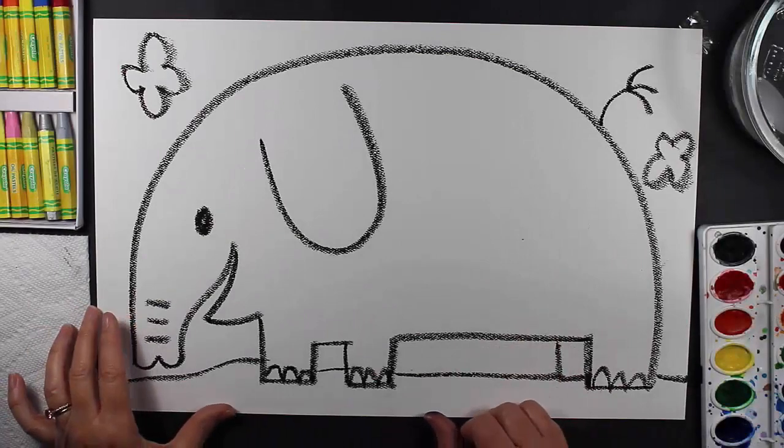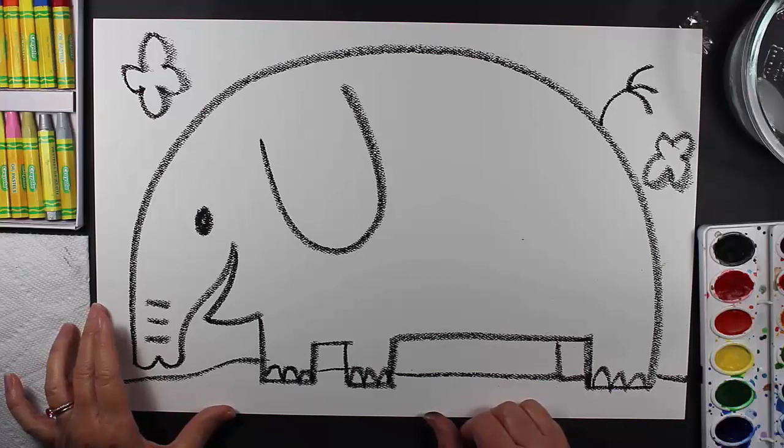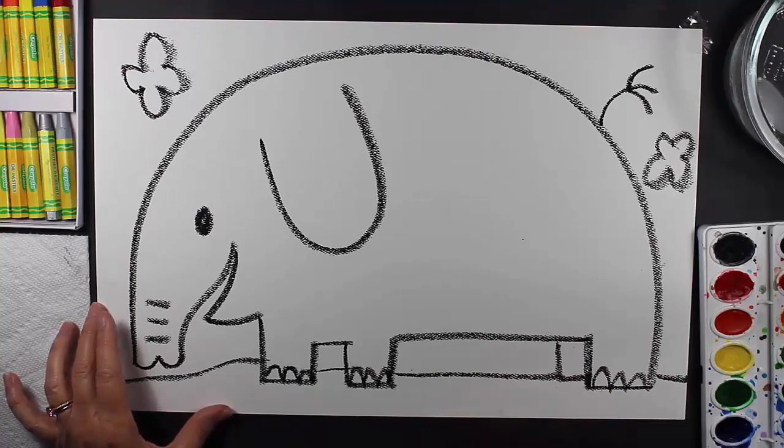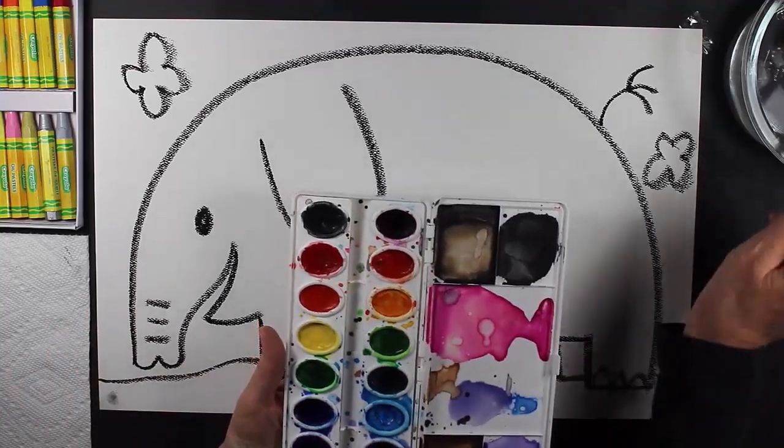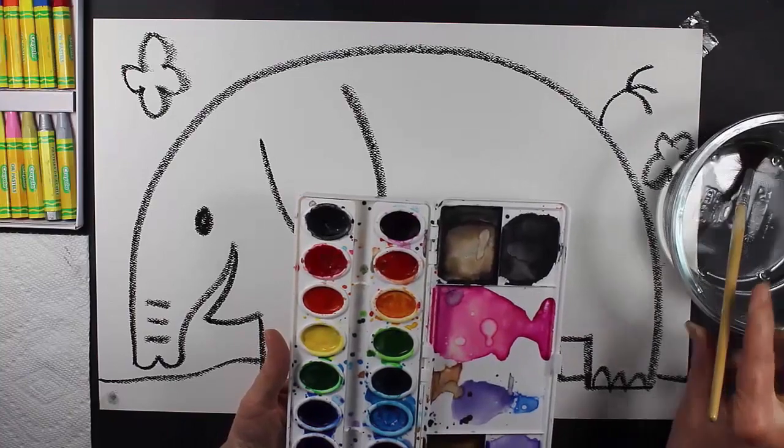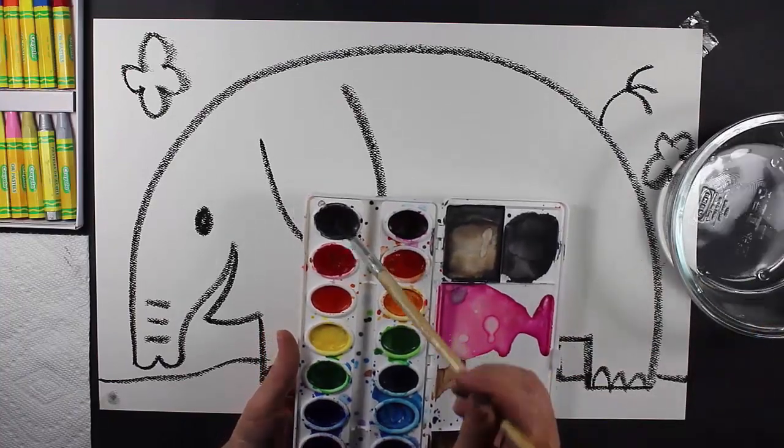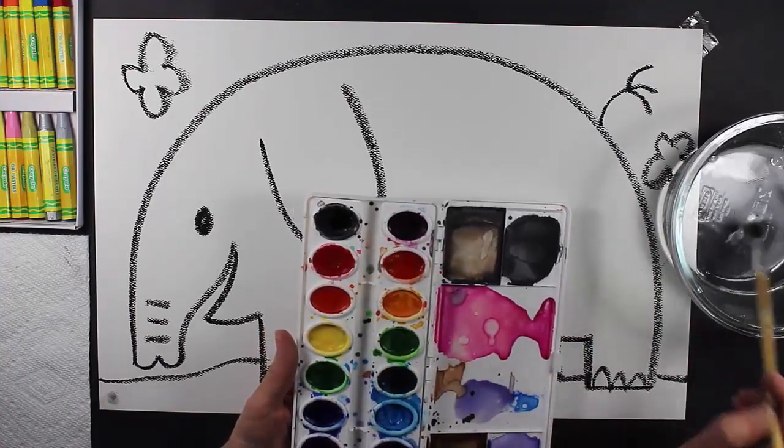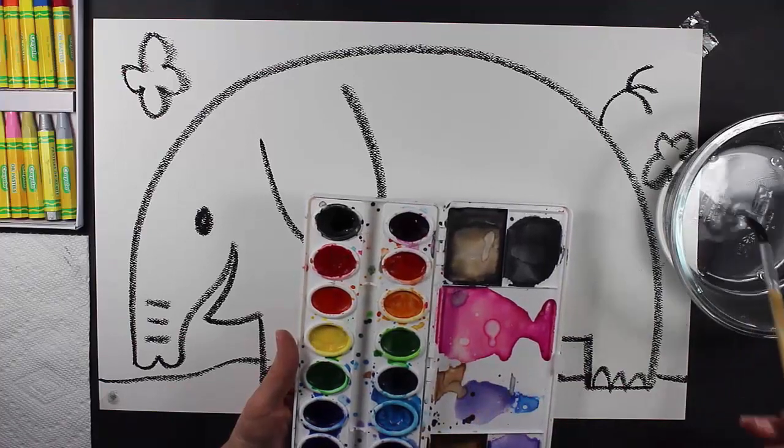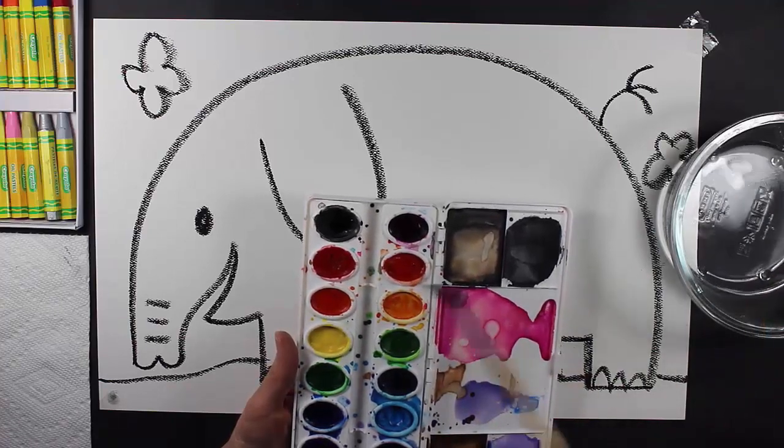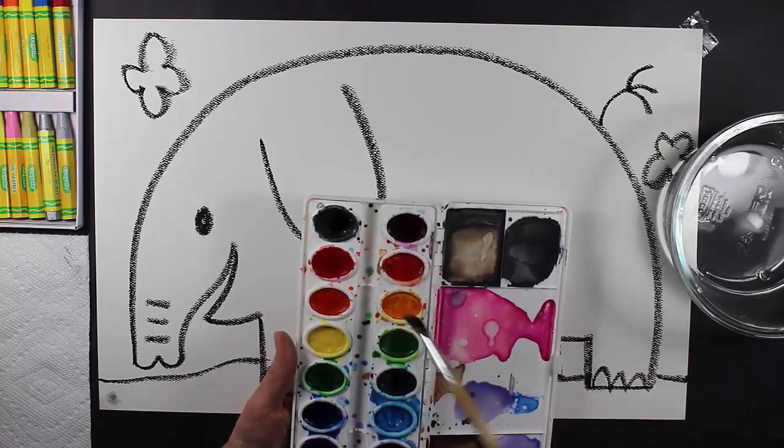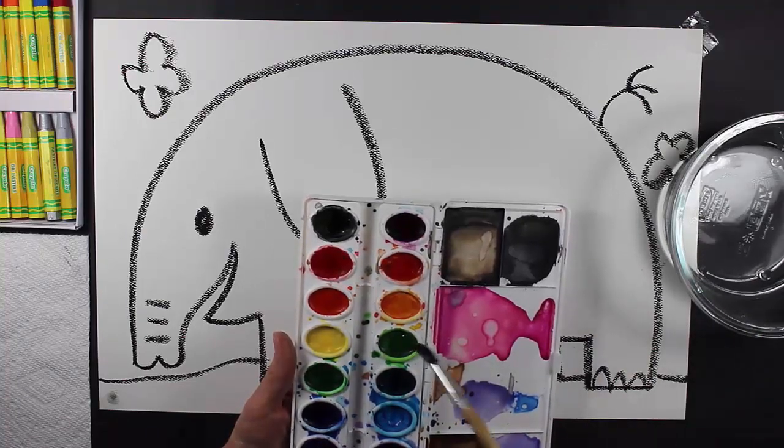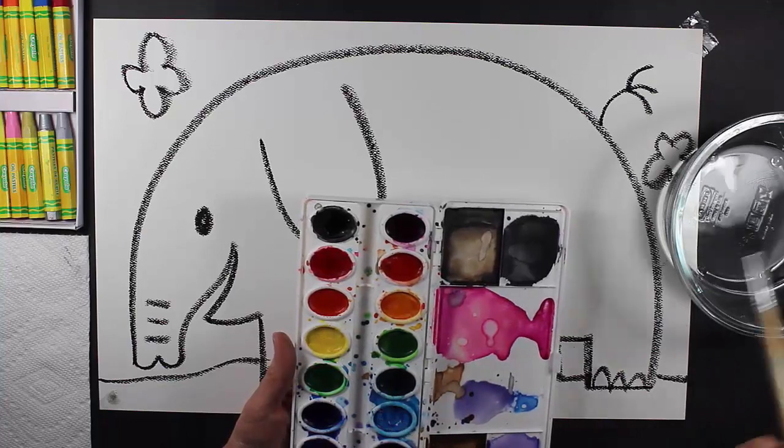All righty friends, so we are going to be doing step two on this elephant project. The first thing we're going to do is make sure that we wake up our paints. I'm going to take a little bit of water and put a drop of water in each color of my pan paints. This will dissolve a little bit of the paint and the paint will wake up and be ready for us to use.